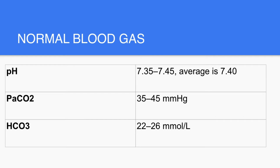In case of compensated alkalosis, the pH would be more than 7.4 but less than 7.45. Both these values would be within the normal range in case of fully compensated. What about carbon dioxide? The normal is 35 to 45 mmHg. If it's less than 35, then this is respiratory alkalosis, and if more than 45, this is respiratory acidosis. What about the normal bicarb? The normal bicarb is usually 22 to 26 mEq/L.